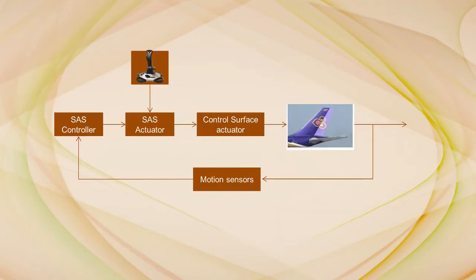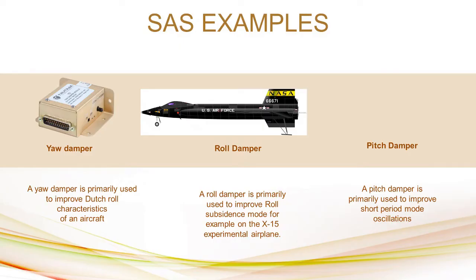Dynamic stability is achieved in SAS by using feedback control and adding control inputs to the pilot's commands. Some examples of SAS include axis dampers like the yaw damper, roll damper, and pitch damper.